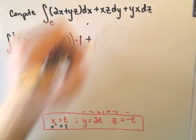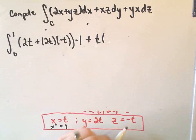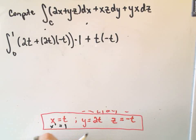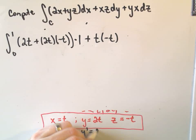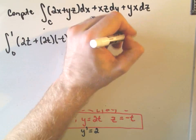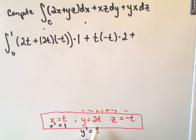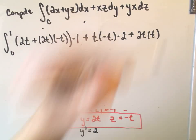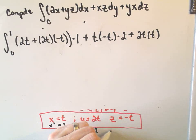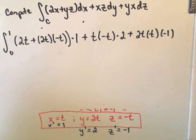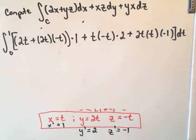Plus, and then again, it just says plug in x, which is t, plug in z, which is negative t. It says multiply that by dy. If we take our dy, or our y prime, we'll simply get 2. So we're going to have to multiply all of this by 2. And then it says we take y, which is 2t, times x, which is t. And again, just multiply this by dz, or z prime, rather. So z prime is going to be negative 1. So we'll multiply all of this by negative 1. And then we're integrating all of this with respect to t.